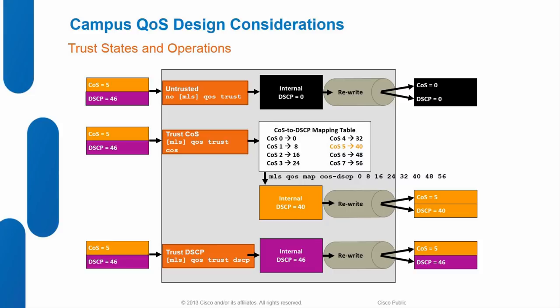On MLS-based switches, you'll see trust states: untrusted, trust CoS, and trust DSCP. By default, everything is untrusted on MLS-based switches — whereas in MQC we trust everything by default, in line with the router-based platform. Untrusted means you rewrite CoS and DSCP to zero. If you trust CoS, you look at the CoS value and overwrite the DSCP based on the internal CoS-to-DSCP mapping table, carrying that internal DSCP value and doing the rewrite on egress. Same applies for trust DSCP — you trust the DSCP and overwrite the CoS value on egress.